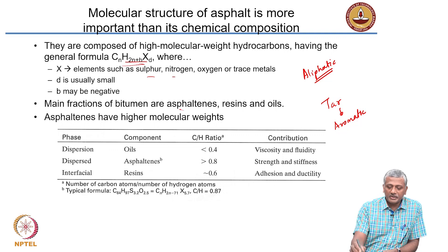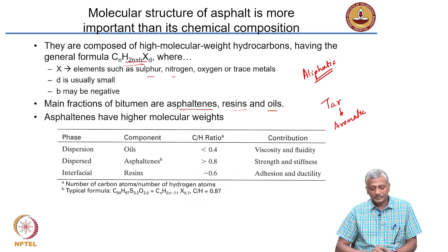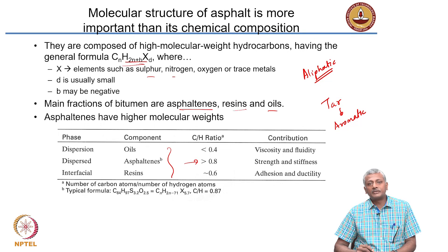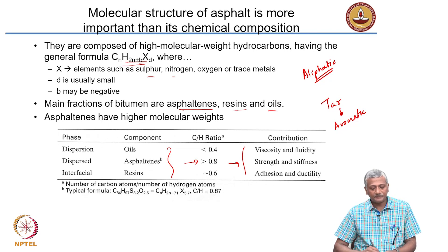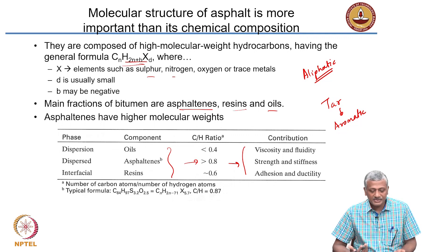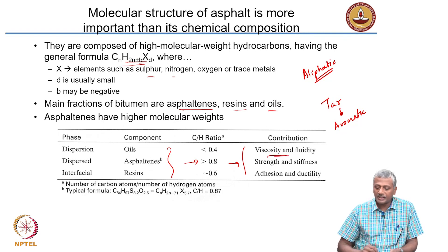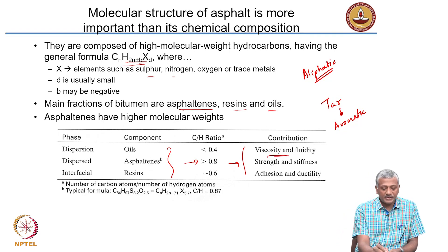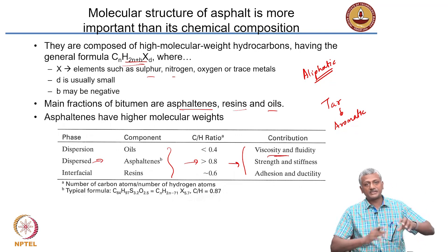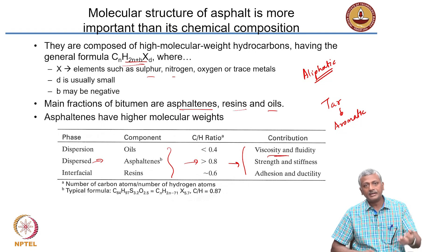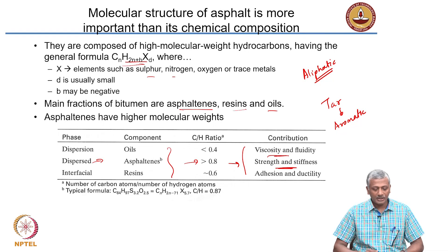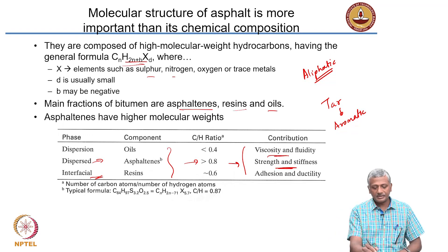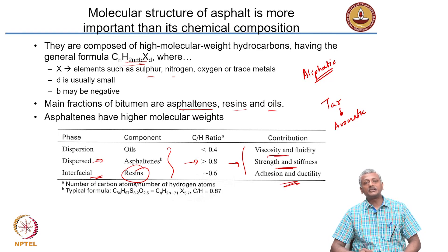The composition of asphalt or bitumen is made up of asphaltenes, resins, and oils. These materials differ in terms of the type of hydrocarbon and the carbon-to-hydrogen ratio in the polymer molecules. The dispersing phase — the oils — is responsible for fluidity and viscosity. The dispersed phase, the asphaltenes, is responsible for strength and stiffness. The interfacial phase between the asphaltenes and the oil consists of the resins, which are responsible for the adhesion and ductility of the asphalt.